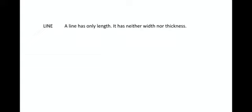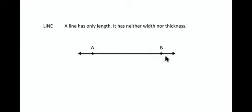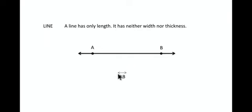Next is a line. A line has only length, and it has neither width nor thickness. We take any two extreme points of this line, let's say point A and B, and there should be two arrowheads on both sides. This indicates that this line will go up to infinity towards both sides. So if there are two arrowheads on both sides, then it's a line, and line AB is represented as AB with a small line with arrowheads on top, written on top of AB. This is how we represent a line.